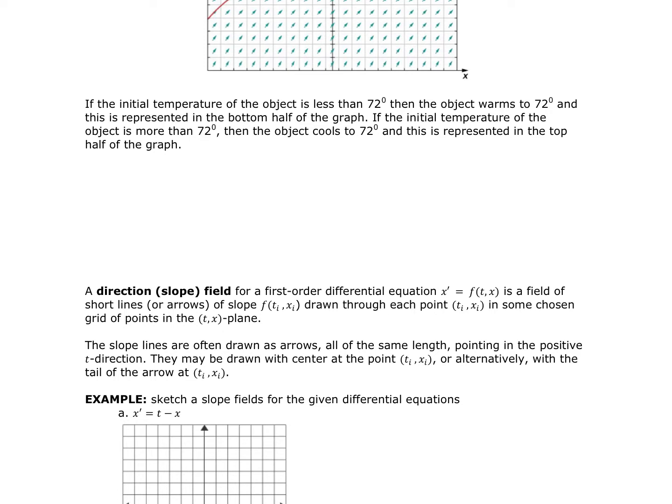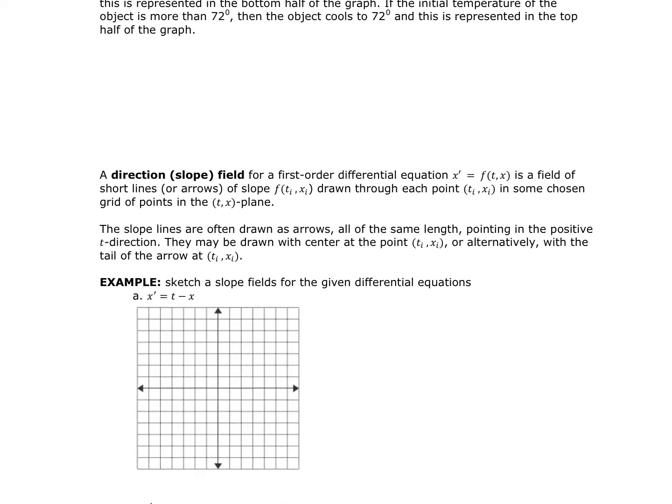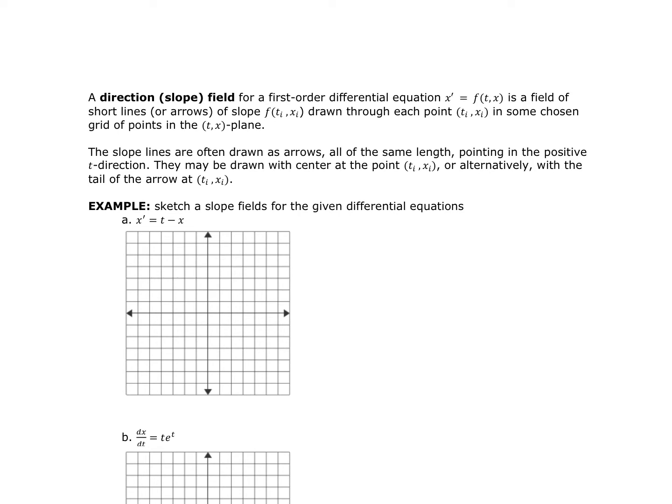The arrows may be drawn with a center at the point (T_i, X_i), or alternately with the arrows at (T_i, X_i). If we're asked to draw a slope field with given differential equations, the first thing we want to do is find some values of X and some values of T.